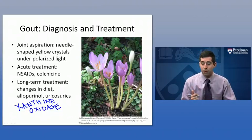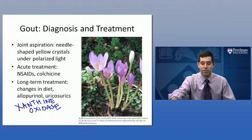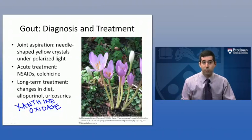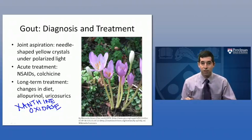So that's it for septic arthritis and gout. In the next lecture, we're going to turn our attention to some connective tissue diseases — in particular, Dupuytren's contracture, de Quervain's tenosynovitis, and trigger finger.